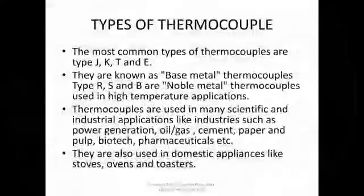Alumel is a nickel alloy with a composition of 95% nickel, 2% aluminum, 2% manganese, and 1% silicon. It is stable up to 1399°C. This magnetic alloy of nickel has good machinability and can be welded using conventional metal welding. It is used for making the Type K thermocouple, which is often paired with chromel. It is also used for making thermocouple extension wire.